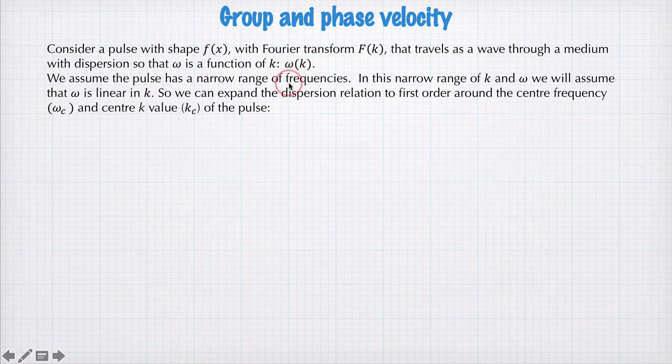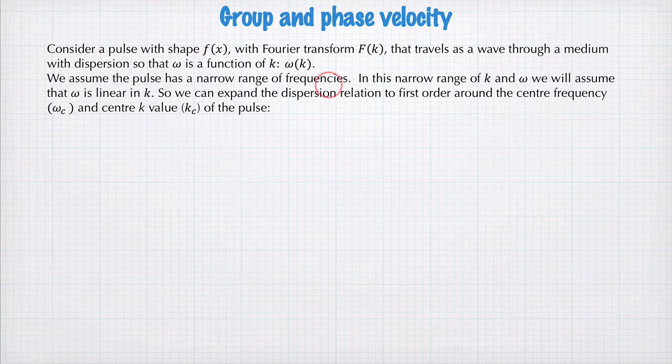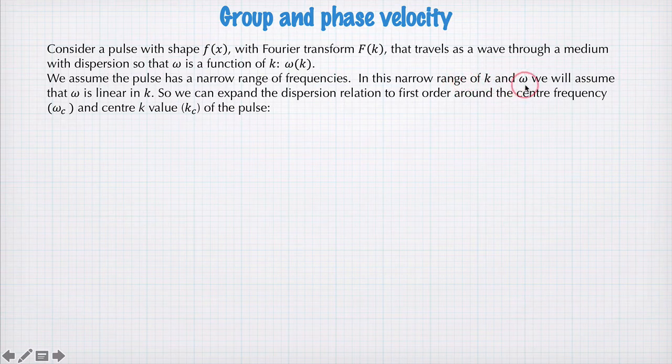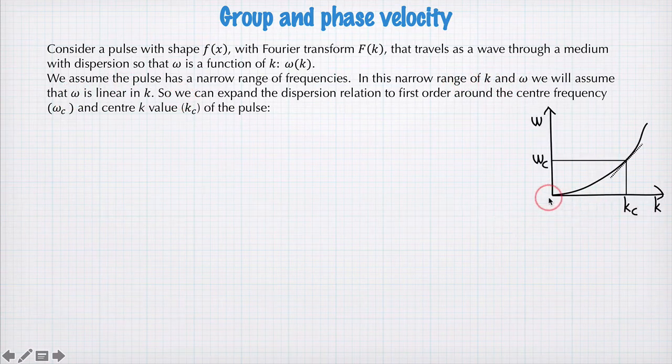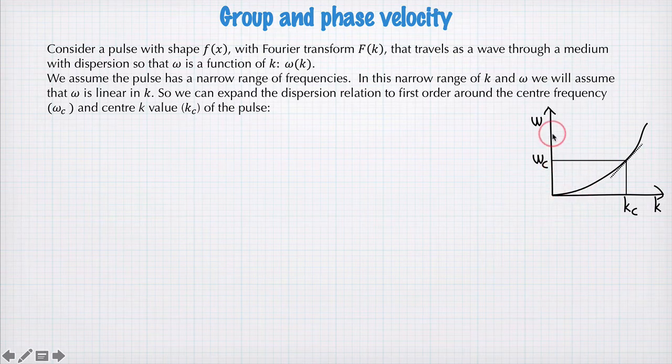We're going to assume the pulse has a narrow range of frequencies. In the previous example, we looked at the modulated Gaussian. This would correspond to a Gaussian that is quite wide in real space, giving us a narrow band of frequencies in k-space. So in this narrow range of k and omega, we'll assume that omega is linear in k. So what I mean by that is we look at the dispersion relation, so we have some relationship between omega and k, which is this dispersion relation.